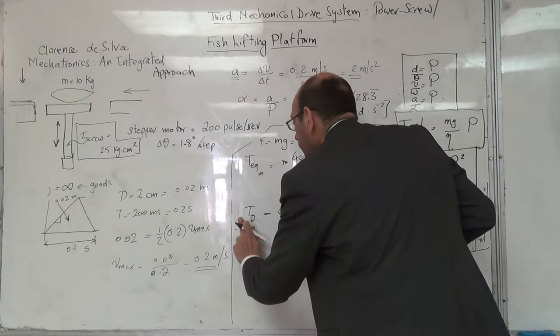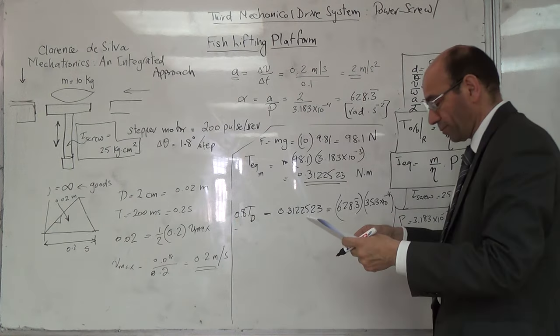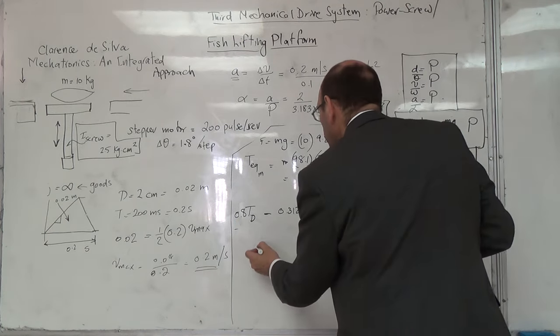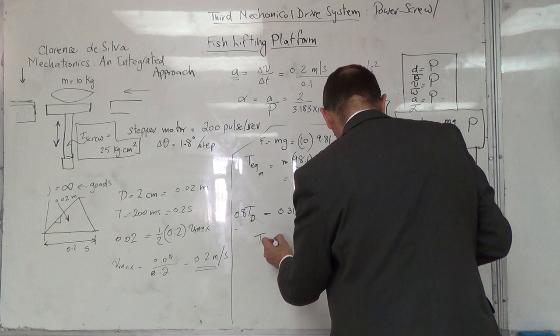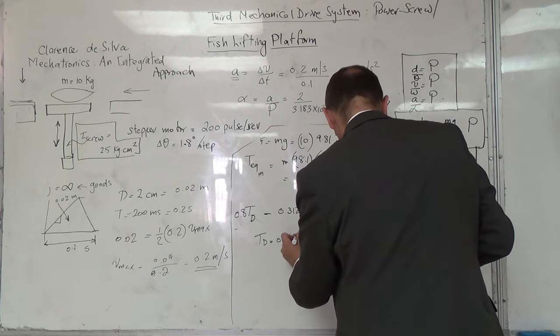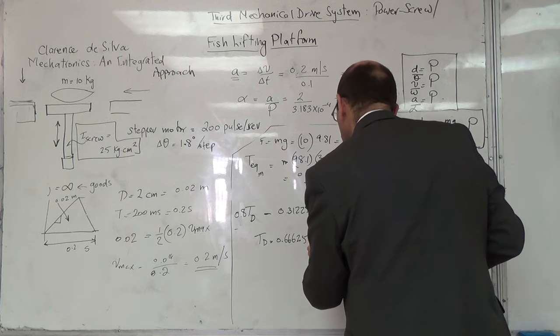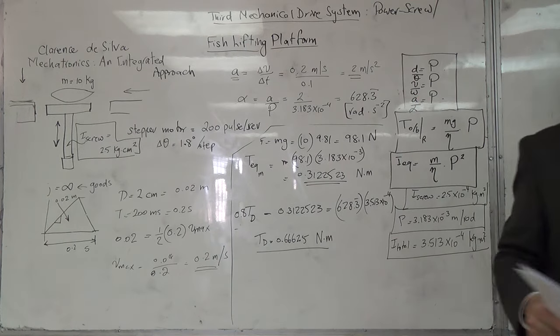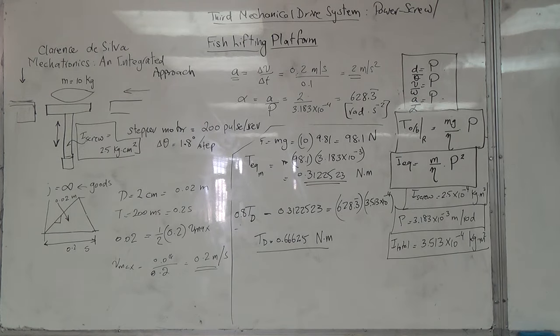And we will use 0.8. The final required torque TD is 0.66625. Of course it seems like a small number, but the motor size is small.